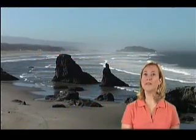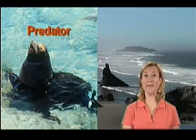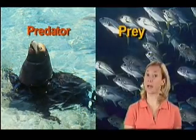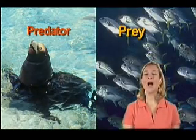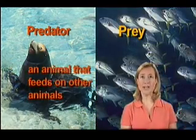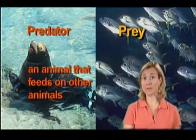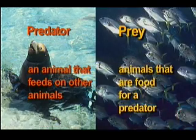In the case of a seal and a fish, the seal is called a predator and the fish it eats is called its prey. A predator is an animal that feeds on other animals, and the prey is an animal that is food for the predator.